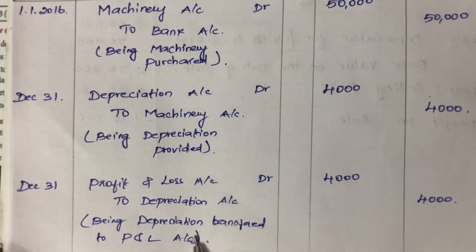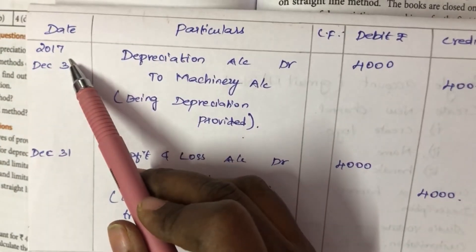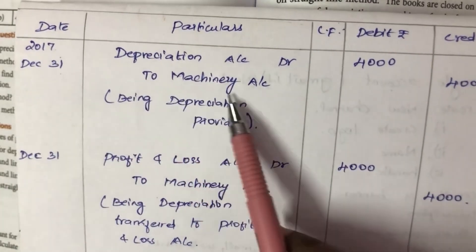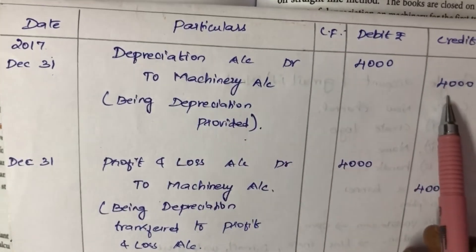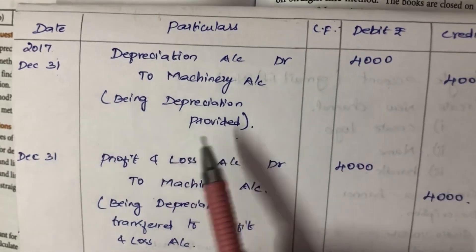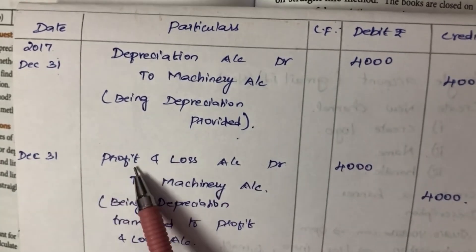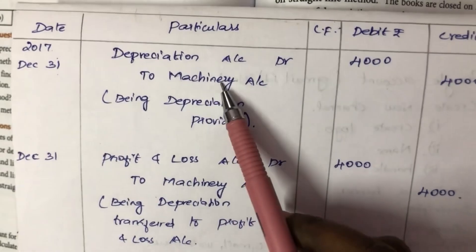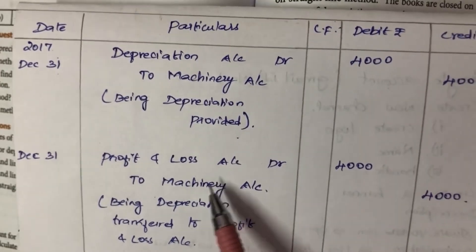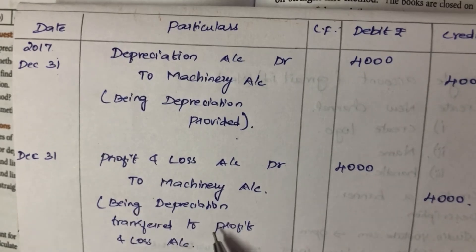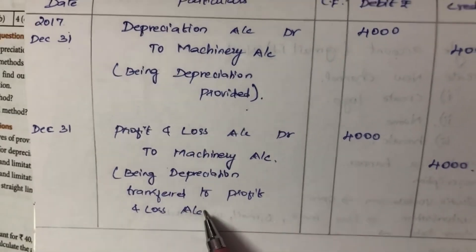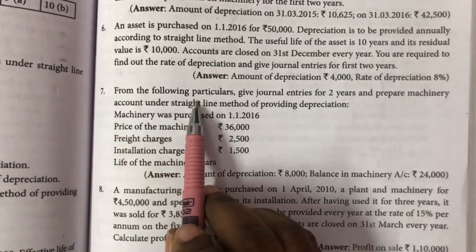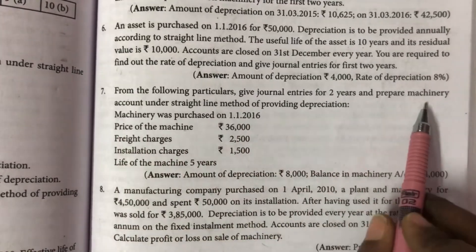The depreciation of 4,000 rupees is transferred to the profit and loss account. Being depreciation transferred to profit and loss account — this is the narration. For 2 years, the depreciation entries are the same. Next sum.